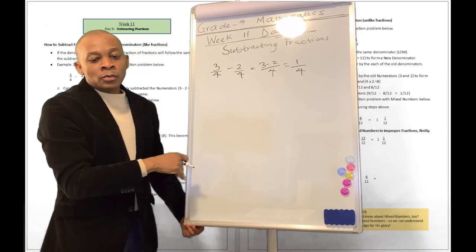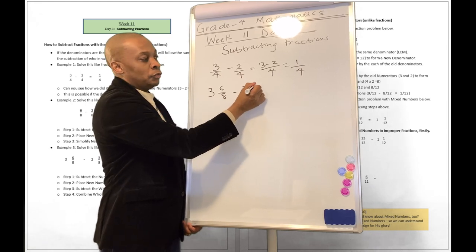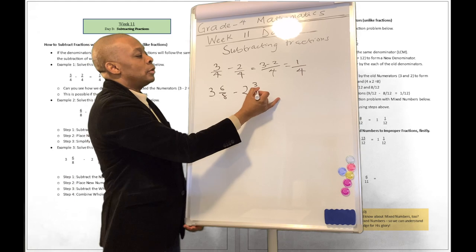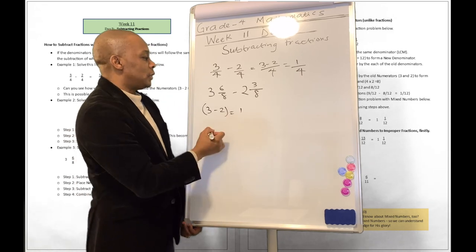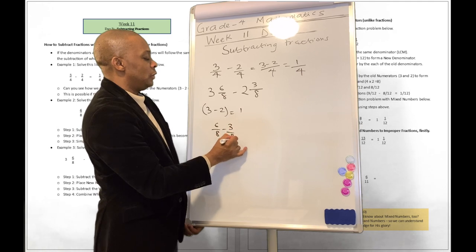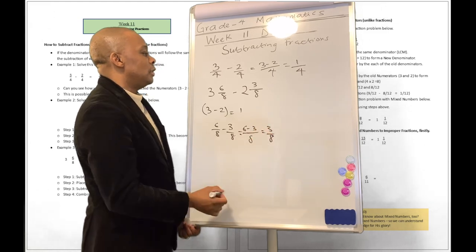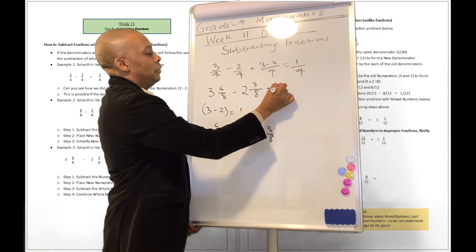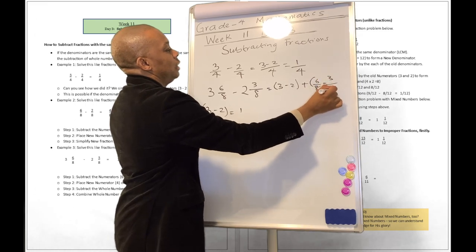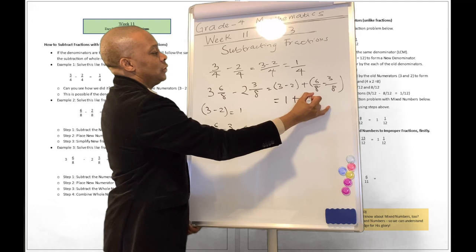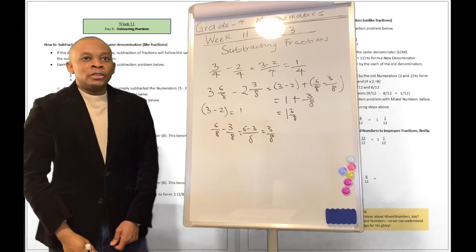What about if we have a mixed number like 3 and 6 over 8 minus 2 and 3 over 8? We can do that one of two ways. We can say what is 3 minus 2? Well, 3 minus 2 is going to be equal to 1. Then we can say what is 6 over 8 minus 3 over 8? That's going to be 6 minus 3 over 8, which is 3 over 8. Adding it together gives us 1 and 3 over 8. So that's one way to do it.